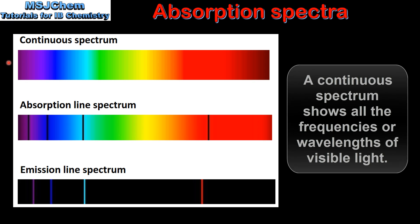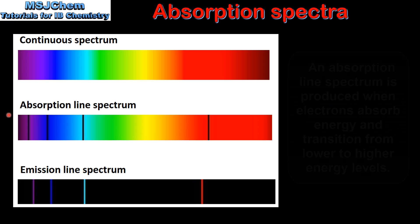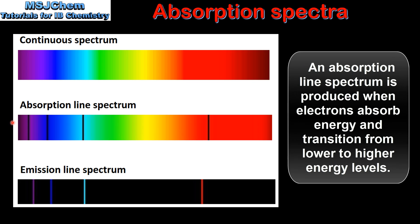A continuous spectrum shows all the frequencies or wavelengths of visible light. An absorption line spectrum has black lines on a coloured background. Absorption line spectra are produced when electrons transition from lower to higher energy levels, absorbing energy that corresponds to the frequency or wavelength of visible light.